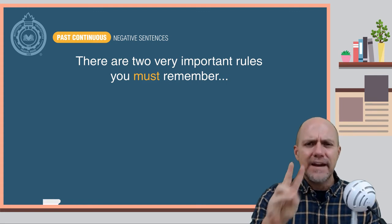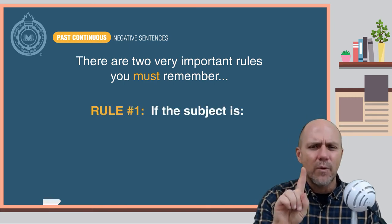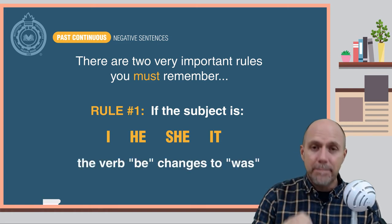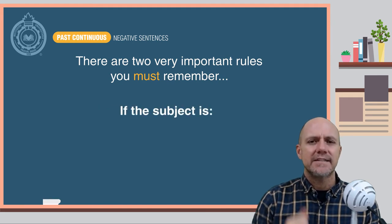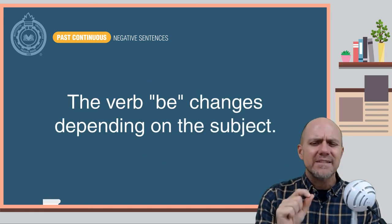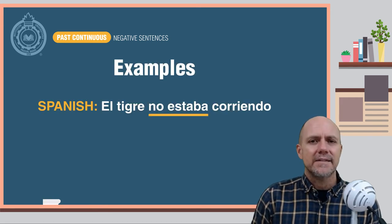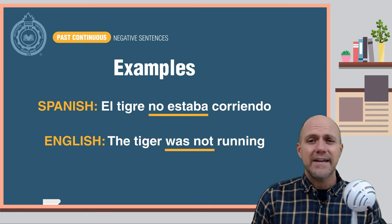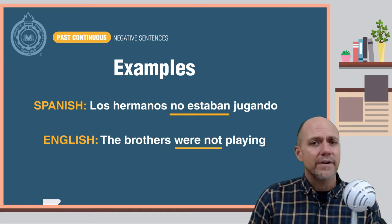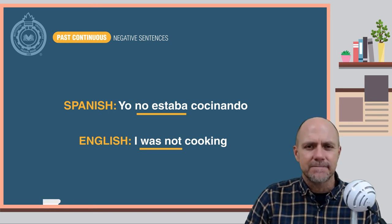There are two very important rules you must learn when speaking in the past continuous in negative sentences. Rule number one: if the subject is I, he, she, or it, the verb be changes to was. If the subject is they, we, or you, the verb be changes to were. So just like in Spanish, the verb be changes depending on the subject. Here are some examples: El tigre no estaba corriendo — The tiger was not running. Los hermanos no estaban jugando — The brothers were not playing. Yo no estaba cocinando — I was not cooking.